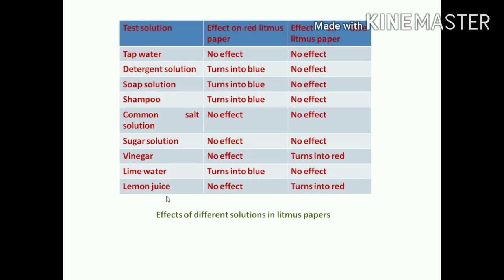Next is lemon juice. Lemon juice has no effect on red litmus paper, and it turns the blue litmus paper into red. So lemon juice is an acid solution.